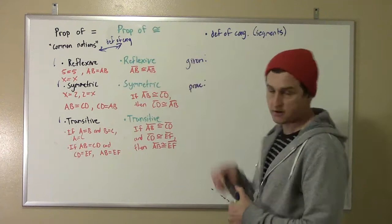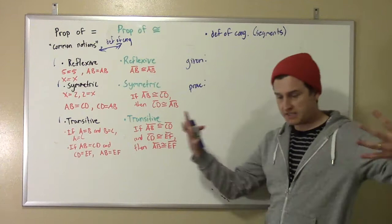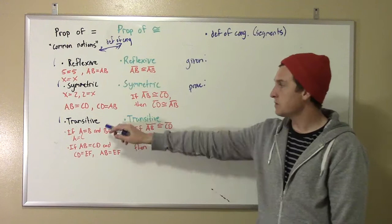Okay, this is property three of congruence, the transitive property. We're going to prove this very similarly to how we proved the other two. We're going to combine a property of equality with the definition of congruence, and we're going to use those things to prove that there must be a transitive property of congruence as well.